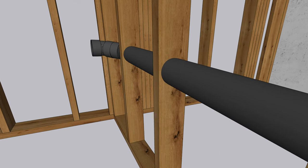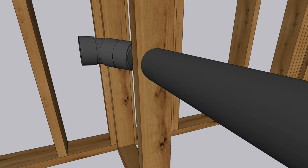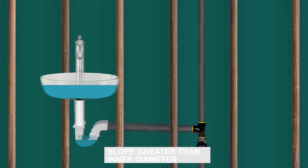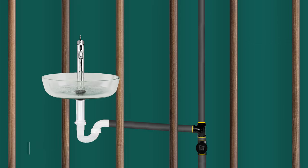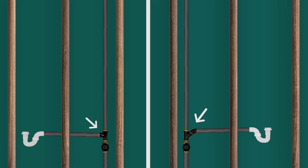If a trap arm pipe is too long, or slope is greater than its inner diameter, water is siphoned from the trap seal due to negative pressure, which allows the sewer gases to enter the house. Using a Y fitting instead of a tee will have the same negative effect.